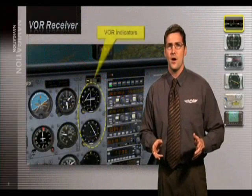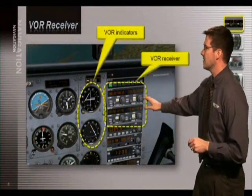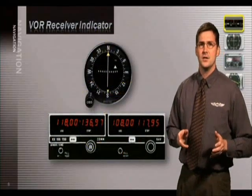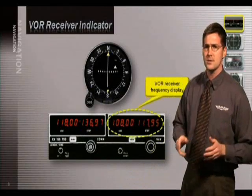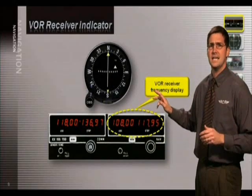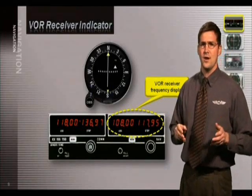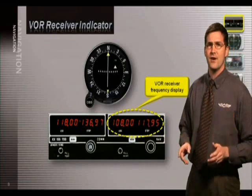Now in addition to the VOR indicator, the aircraft is equipped with a receiver. The receiver is a tuning device. Prior to navigating to or from your VOR station, you have to enter the VOR frequency and identify each station. Each station has its own Morse code identifier. Here's an example of what you hear when you identify the station.